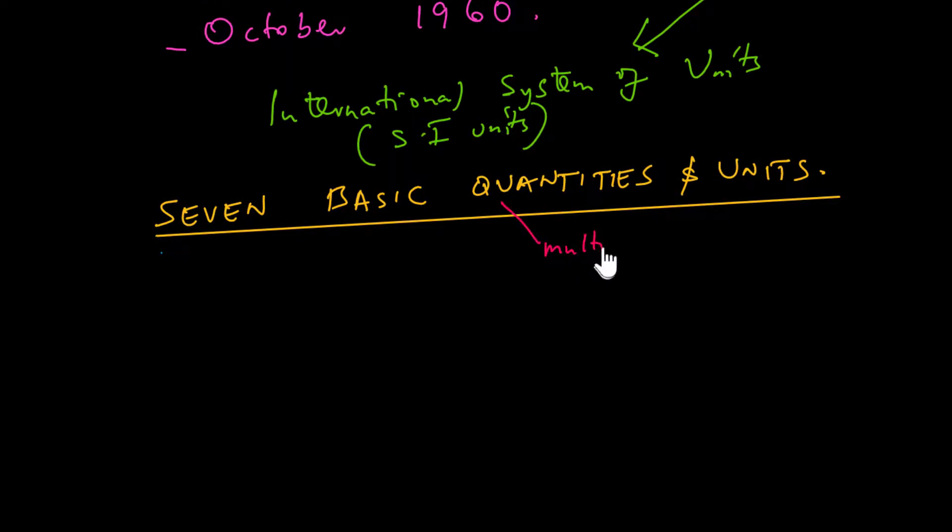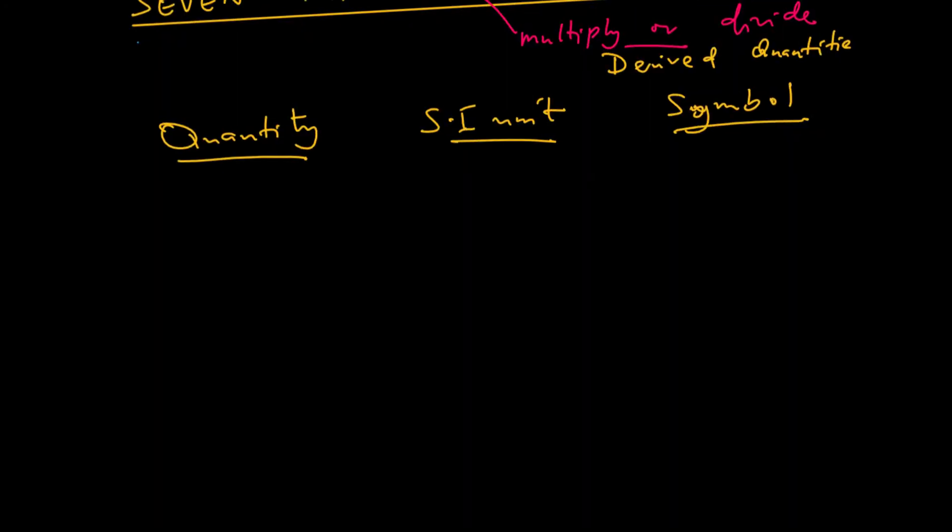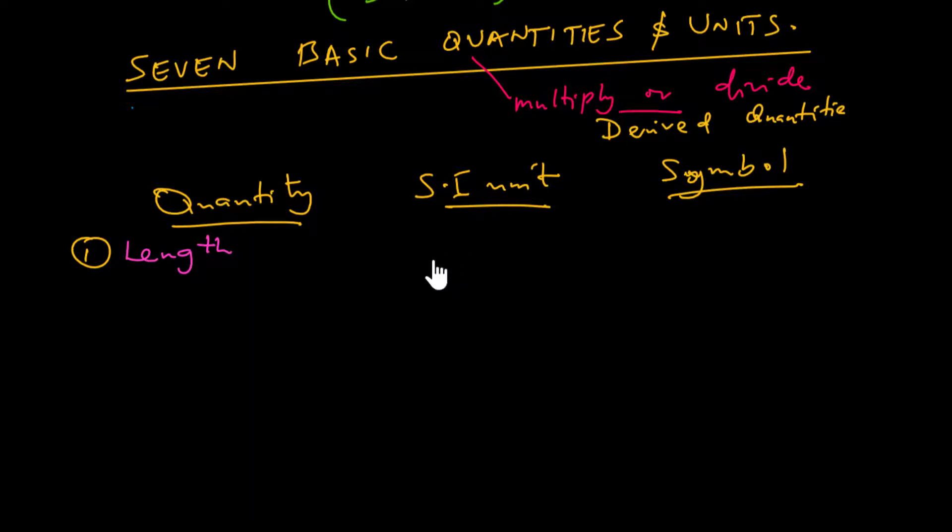Other quantities can be obtained from the multiplication or division of these basic quantities, and they will be called derived quantities. Here are the seven basic quantities, their SI units and symbols. Number one: Length. The SI unit for length is the meter, and the symbol is a small letter m.